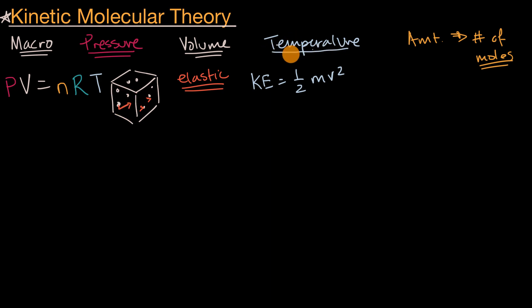And temperature is related to the average kinetic energy of these particles. It would be proportional. The higher the temperature, the higher average kinetic energy. Now, average kinetic energy is really important because some of these particles might be moving faster than others.